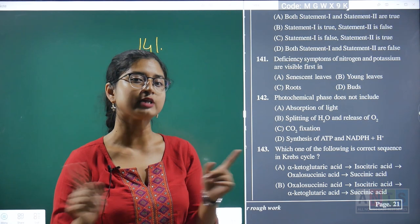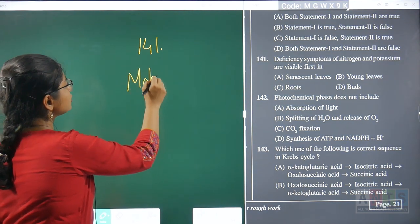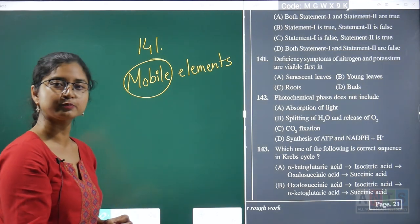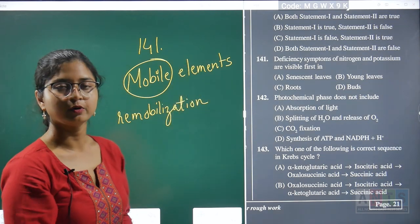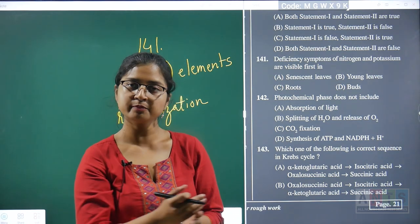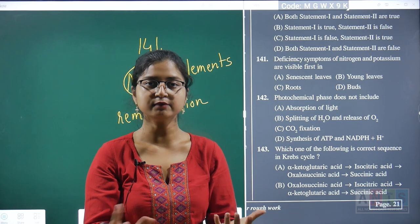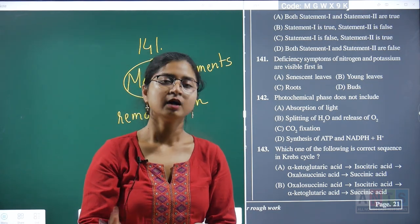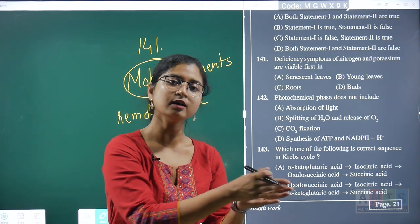Question 139: epiblast is a part of — epiblast represents a highly reduced, almost negligible second cotyledon. This means we are talking about monocotyledonous structures. In some grasses (which are monocotyledonous), the seed contains remnants of a second cotyledon, which is considered the epiblast. Hence, question 139's correct answer is option B.